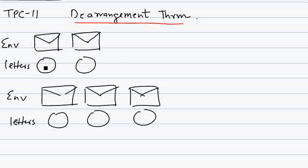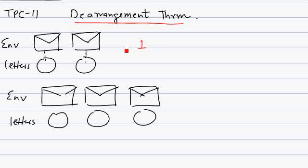The correct position of each letter is its corresponding envelope — this letter should go into this envelope, and this letter should go into this envelope. So the number of ways to place these two letters in their respective envelopes is one way. One way.